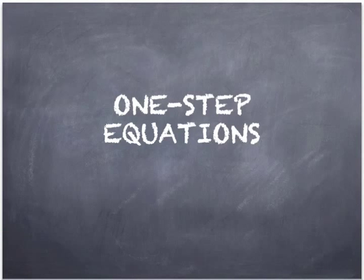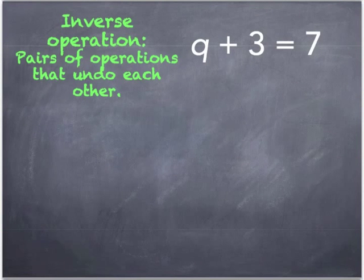In order to do a one-step equation, you need to do the inverse operation. Inverse operation is just the opposite operation that's shown. So for addition, it's going to be subtraction. Let's go ahead and solve this one.